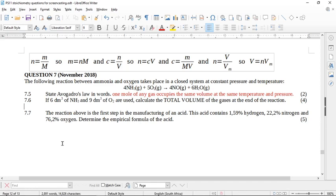Okay, this is question seven from November 2018. The following reaction between ammonia and oxygen takes place in a closed system at constant temperature and pressure. Four ammonia plus five oxygen goes to four nitrogen monoxide and six water.